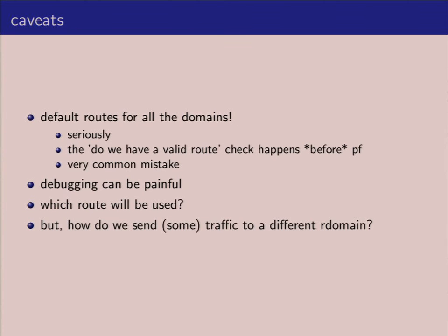A very common use of routing domains is to have the packet come in, use PF to steal the packet from that routing domain and spit it onto another routing domain. In that case, if there's no route, that will fail. So what you really want to do is set up a default route in the routing domain as soon as you create it. In my experience, about 60 percent or more of all problems in production networks were simply forgetting to create a default route. Simply set up a default route and you will avoid a lot of problems.